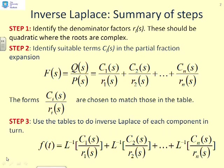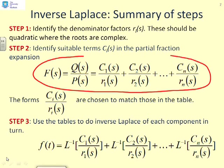The first step was to identify the denominator factors, R subscript i of S. The second step was to write the partial fraction out in terms of the components expected. If our original transfer function was Q over P, we write it as C1 over R1 plus C2 over R2, all the way up to Cn over Rn. This video is focused on how we identify the C_i of S. We won't worry too much about step 3 again because that's straightforward.